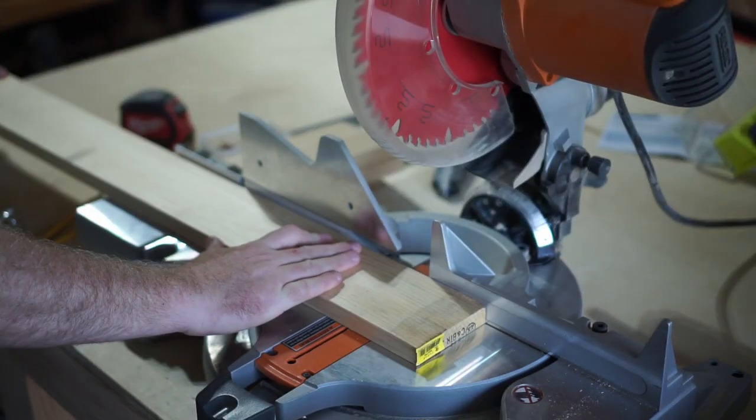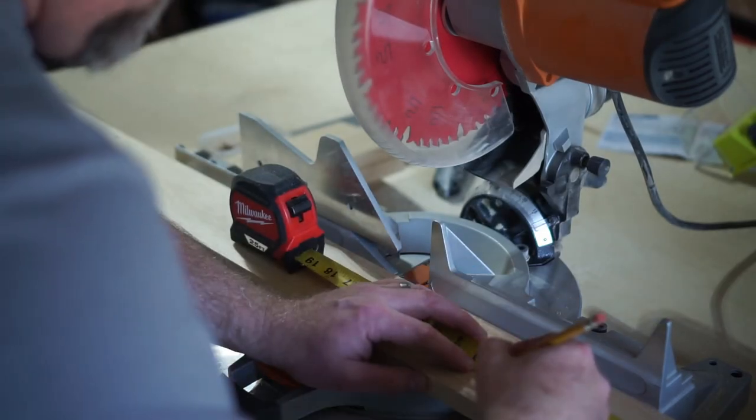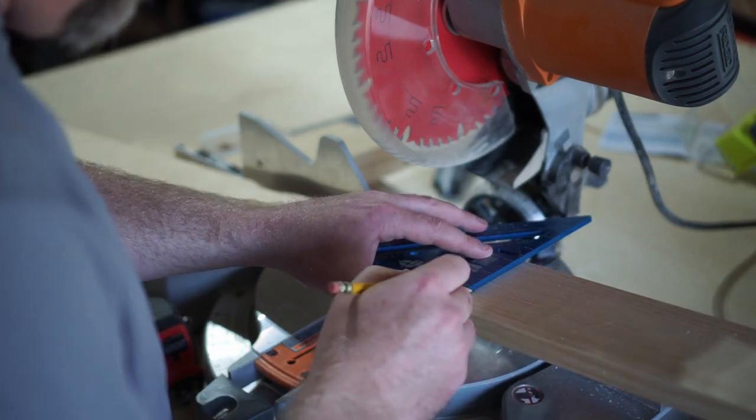Then we're going to cut the two front and back side rails. We'll make those 10 and a half inches long. We're going to cut those out of the 1x4s.